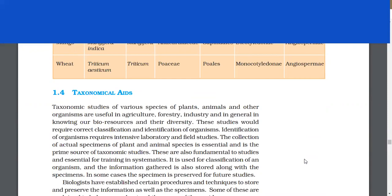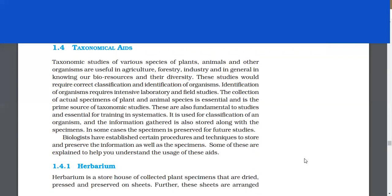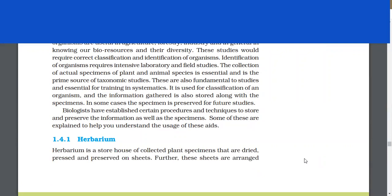These studies would require correct classification and identification of organisms. Identification of organisms requires intensive laboratory and field studies. The collection of actual specimens of plant and animal species is essential and is the prime source of taxonomic studies. These are also fundamental to studies and essential for training in systematics. Biologists have established certain procedures and techniques to store and preserve the information as well as the specimens. Some of these are explained to help you understand the usage of these aids.